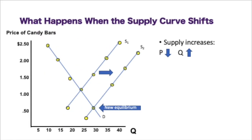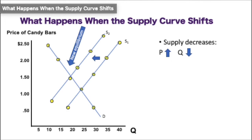The same concept applies to supply. If we shift supply to the right — an increase in supply — we would see a price drop and a quantity increase. If we shift supply to the left — a decrease in supply — price would increase and quantity would decrease, giving us a new equilibrium point for each of these scenarios.